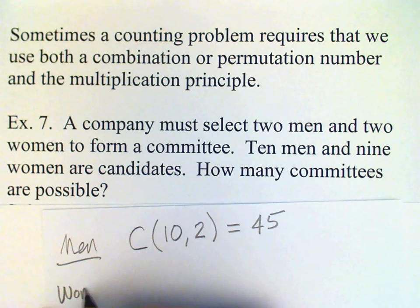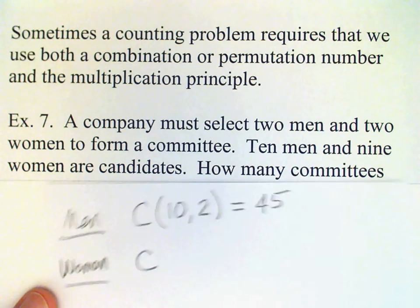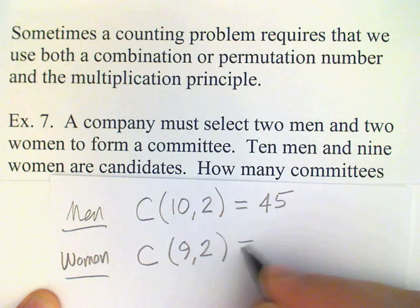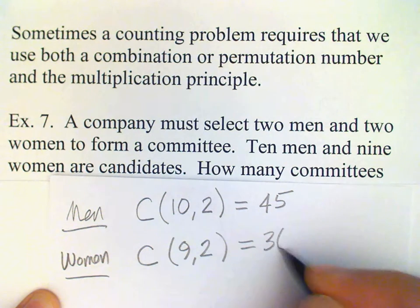The women, again we use C because order is not important. There are nine women available. So C(9,2) and this is 36.